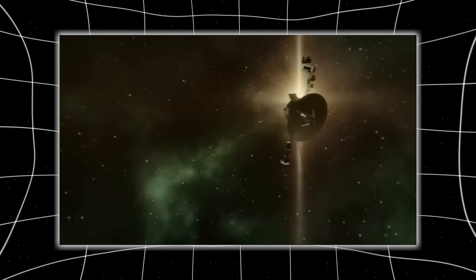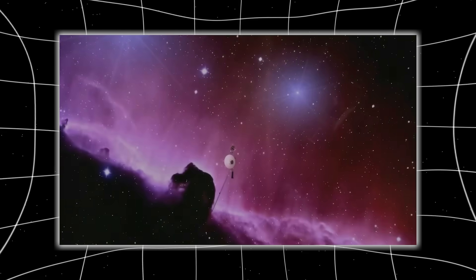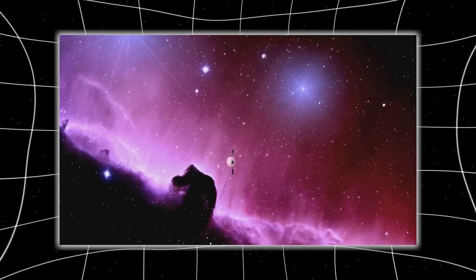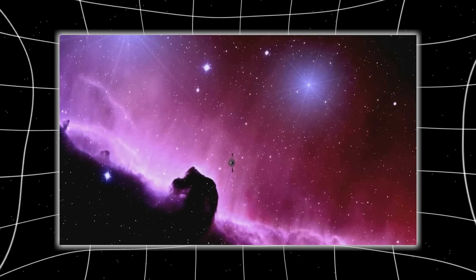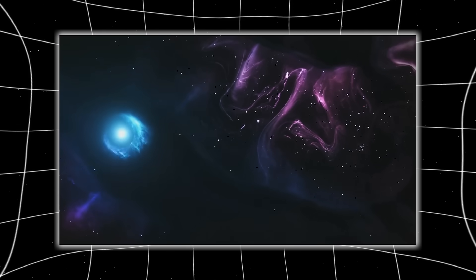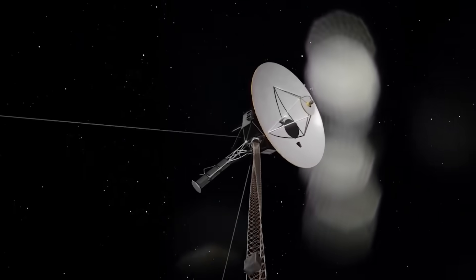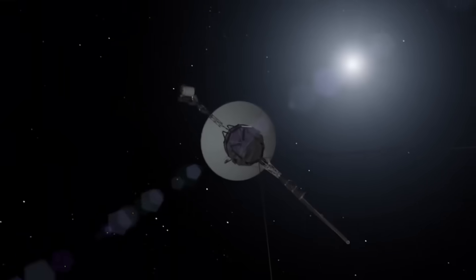Voyager 1 crossed that line in 2012. Officially, it became the first man-made object to leave the bubble of our solar wind and sail into true interstellar territory. But things didn't behave as expected.